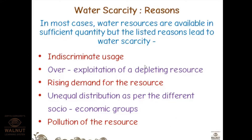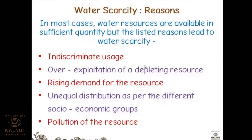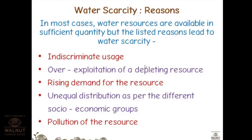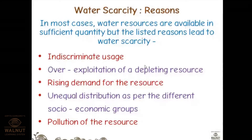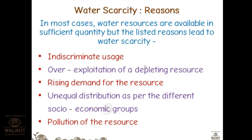Unequal distribution as per socioeconomic groups is another reason — in urban areas there is a continuous and regular supply of water, but in villages, rural places, and small towns people have to travel far to fetch water from reservoirs. Pollution of the resource is also a cause — we are polluting water by dumping waste and trash into it.